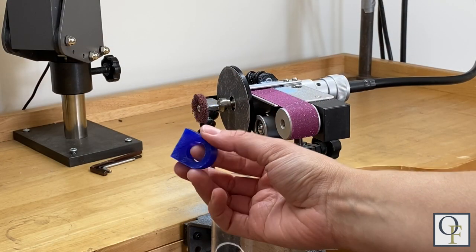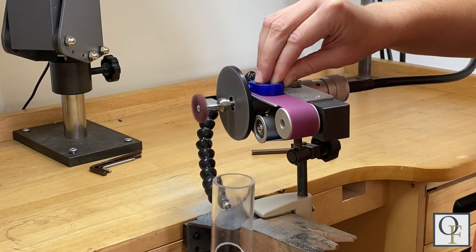When I cut my ring blank from the wax tube I can go back to the sander to even out the other side.